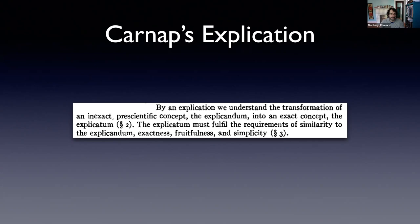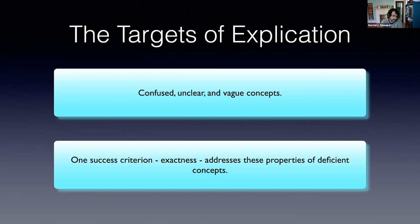The targets of explication for Carnap are concepts that have one of three properties: confused concepts, unclear concepts, and vague concepts — those are the concepts in need of explication. At least one of the four success criteria, namely exactness, addresses these properties. An exact concept is not going to be vague, it's going to be sharp, it's not going to be unclear, and possibly not confused.